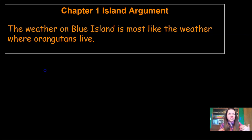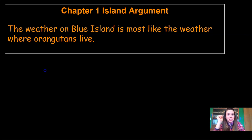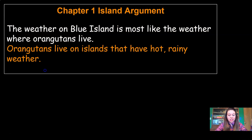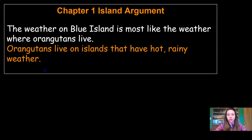Now, if somebody was reading our argument, they may not know what the weather is like where orangutans live, so we should give them a little more information. What two things are we looking for in the weather for the reserve? We're looking for hot weather and we're looking for rainy weather. So let's add that to our argument: orangutans live on islands that have hot, rainy weather. Now we can be sure that our audience knows what weather we're looking for.